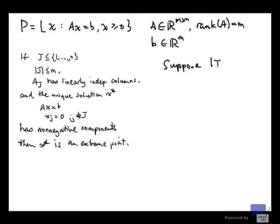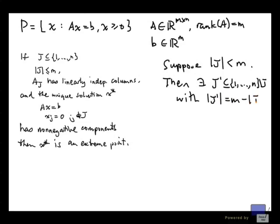Suppose that this is strictly less than m. What we know is there exists another subset of indices disjoint from J, with cardinality m minus the cardinality of J, such that Aj union J' has linearly independent columns.